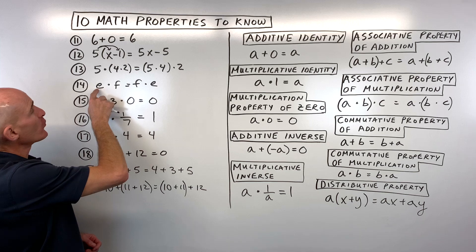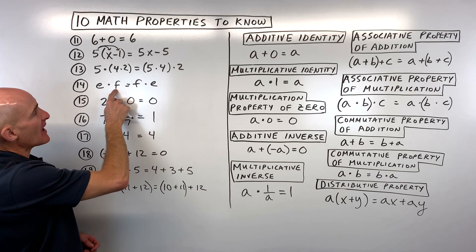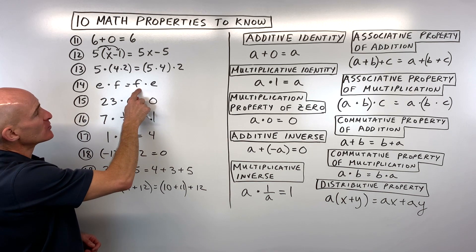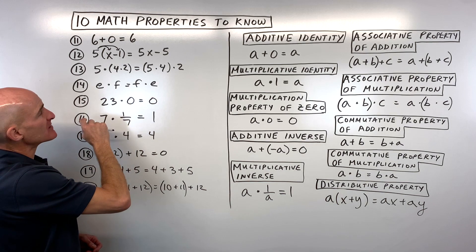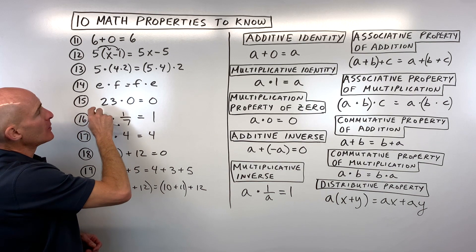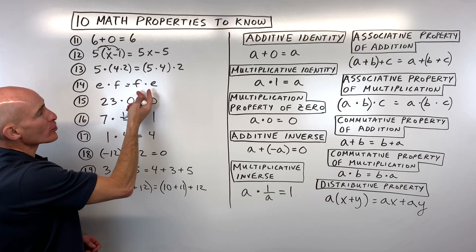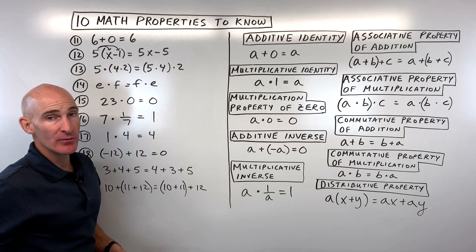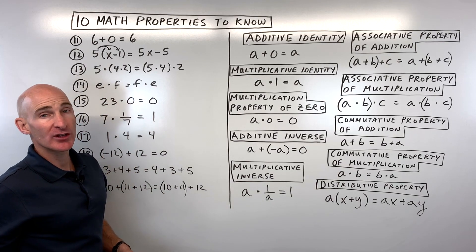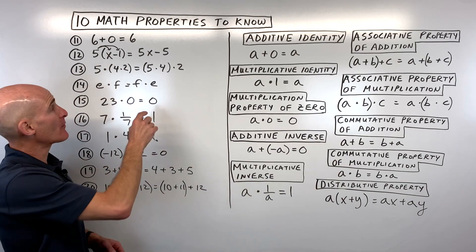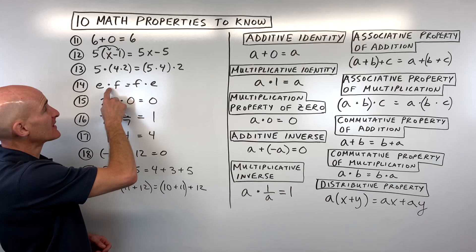For number 14: e times f equals f times e. We changed the order — that's called commuting, or the commutative property of multiplication.